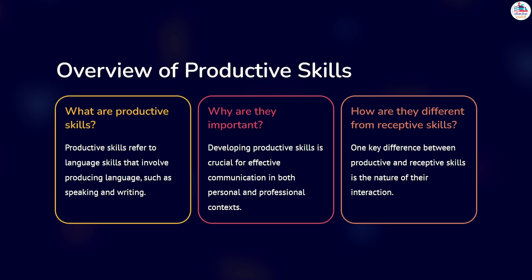Receptive and productive skills are different. One key difference is the nature of their interaction. Productive skills require learners to actively engage in the language production process, formulating their thoughts and expressing them coherently. This active engagement promotes fluency and accuracy. In contrast, receptive skills involve passive engagement, where learners focus on understanding and interpreting language used by others, developing listening and reading comprehension skills.